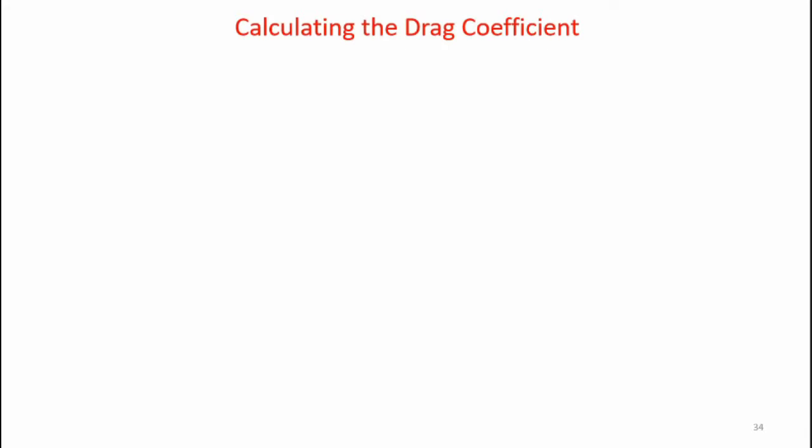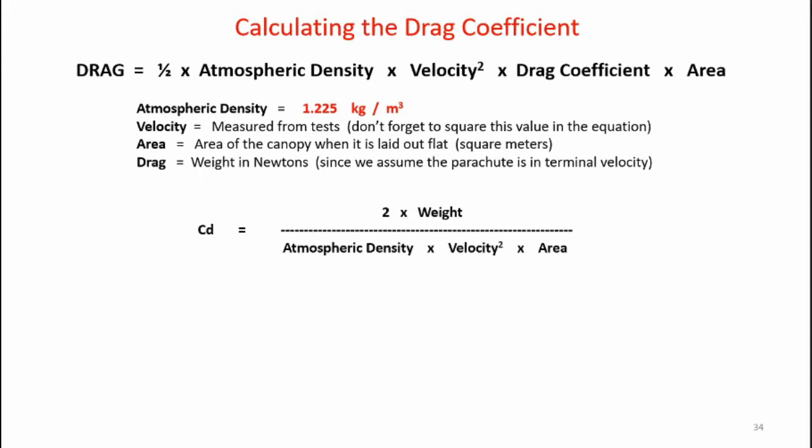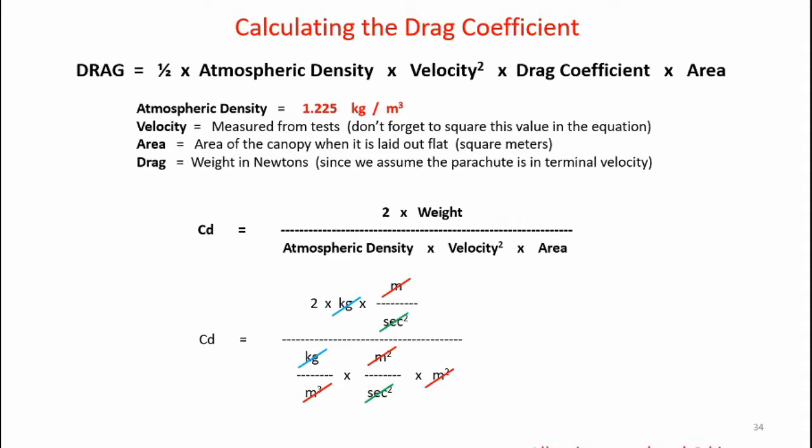Here's how we calculate the drag coefficient from the experimental test data. Recall that drag equals one half times atmospheric density times velocity squared times drag coefficient times area. Applying a little algebra to solve for CD: CD equals 2 times weight divided by atmospheric density times velocity squared times area. To confirm this is unitless, a quick unit analysis shows that all the meters cancel out, the kilograms cancel out, and so do the second squares — so CD is indeed a unitless number.